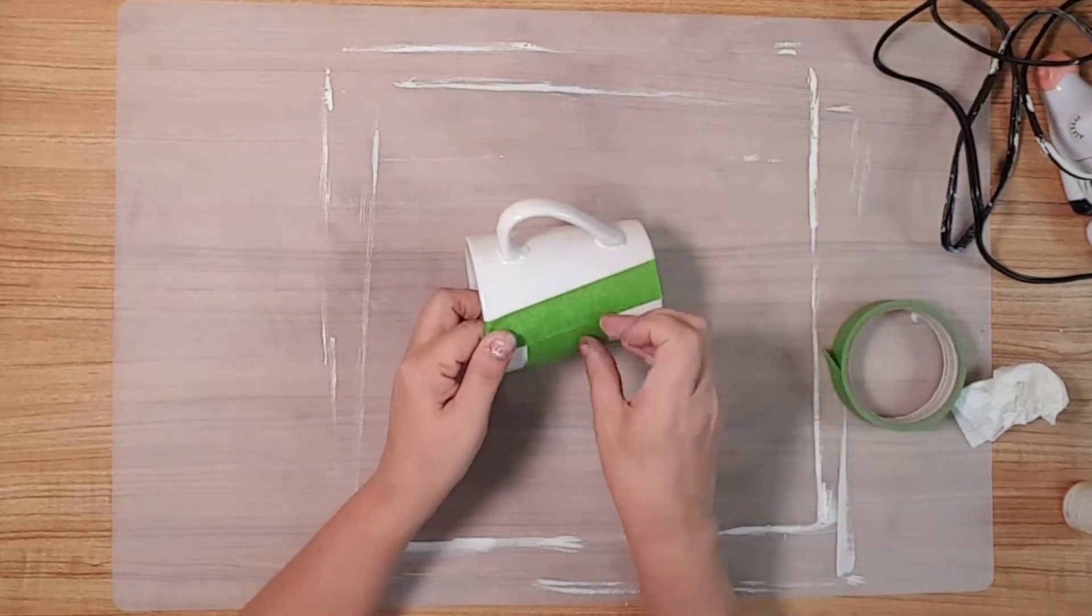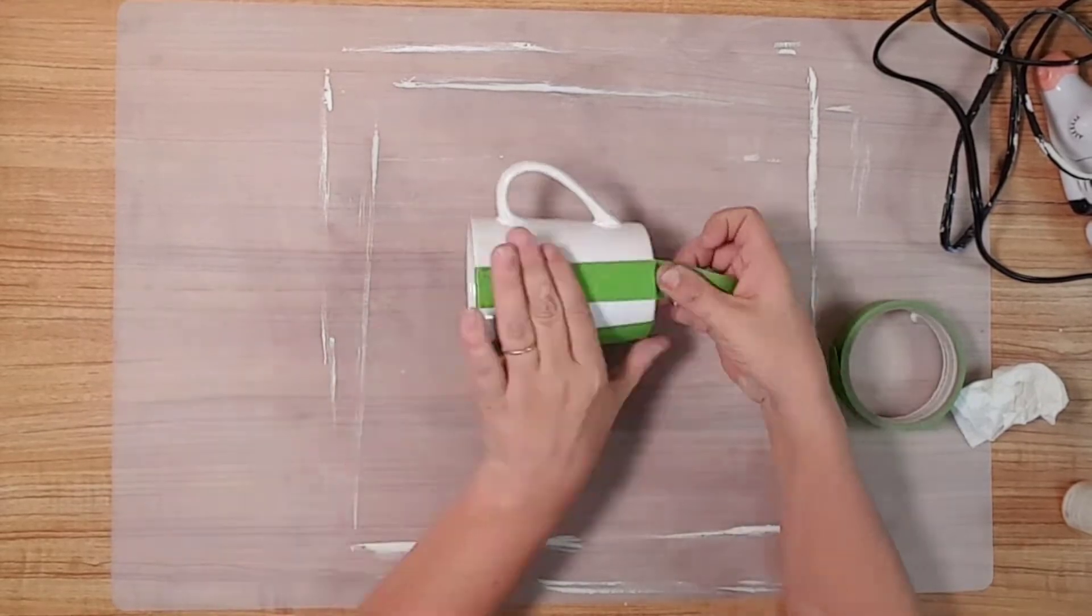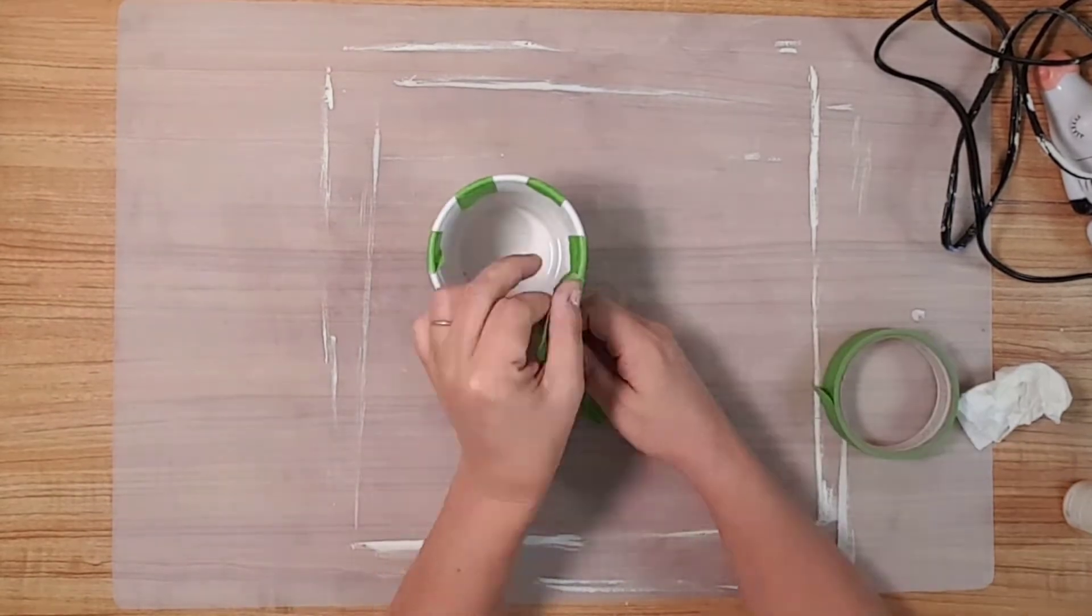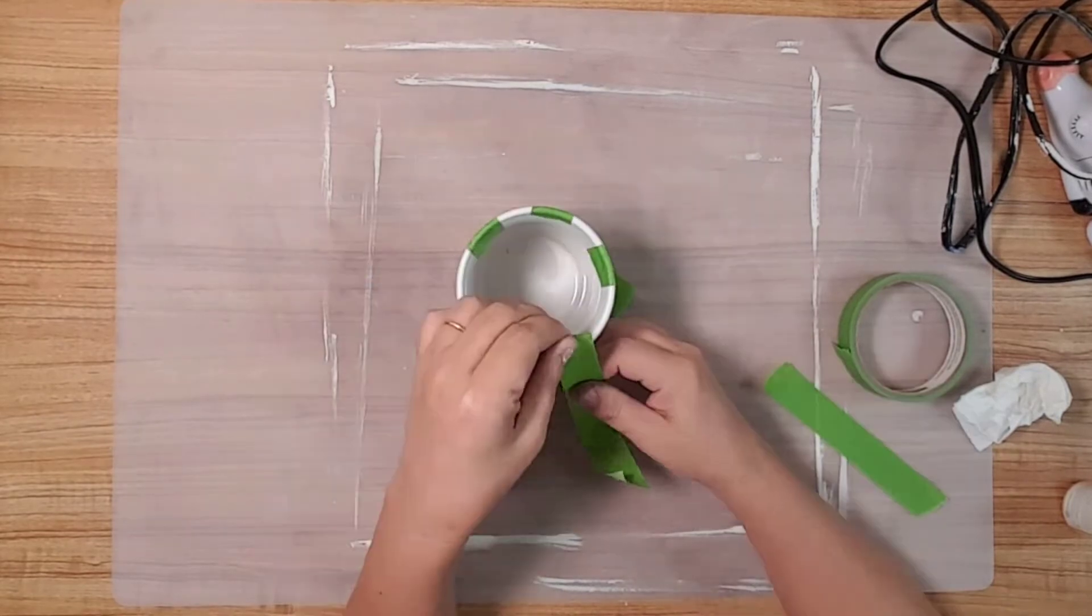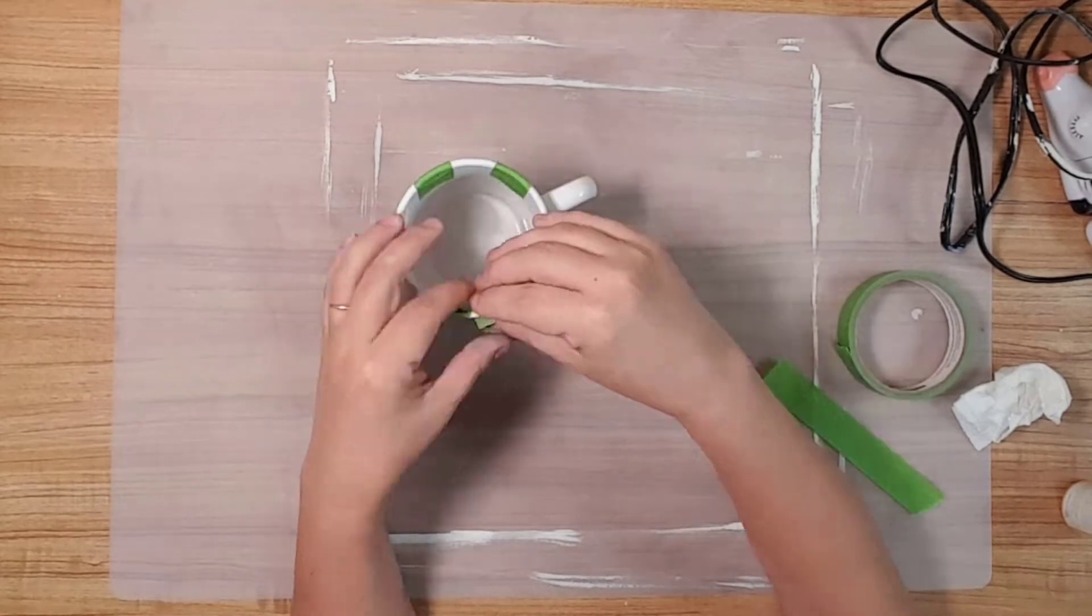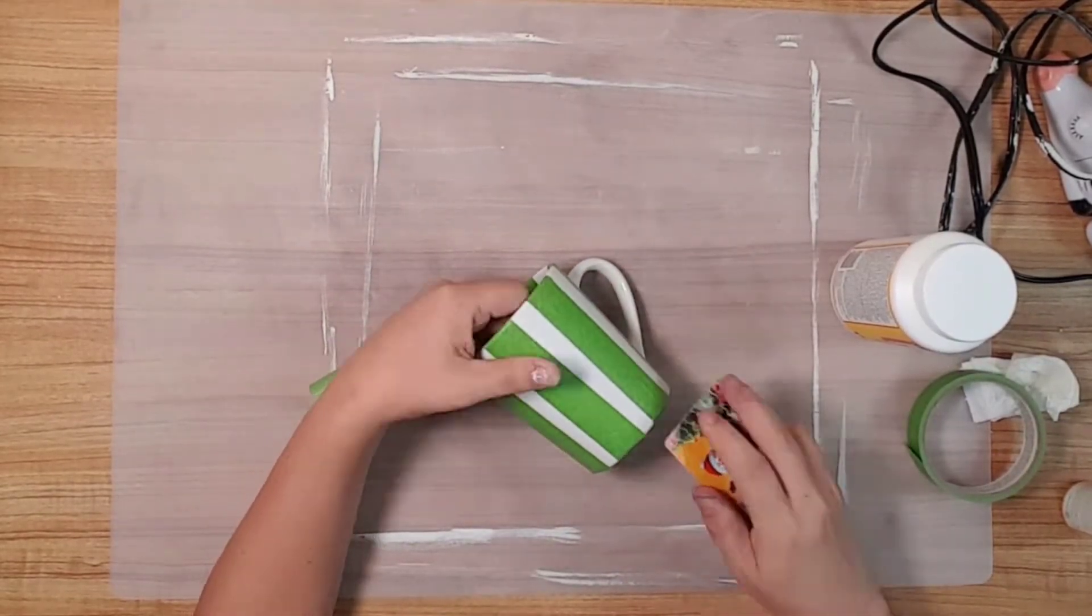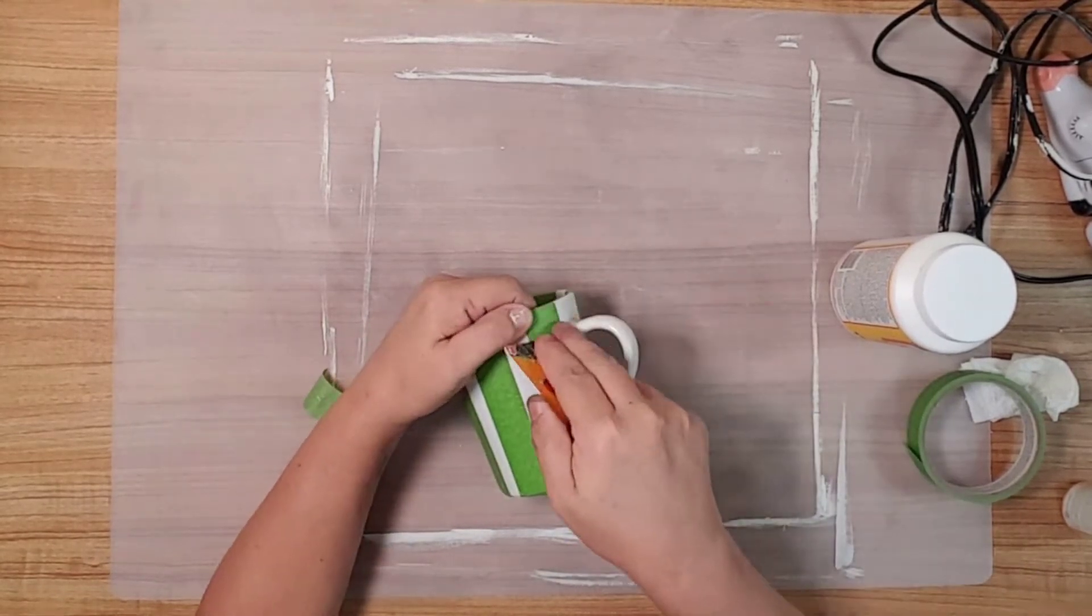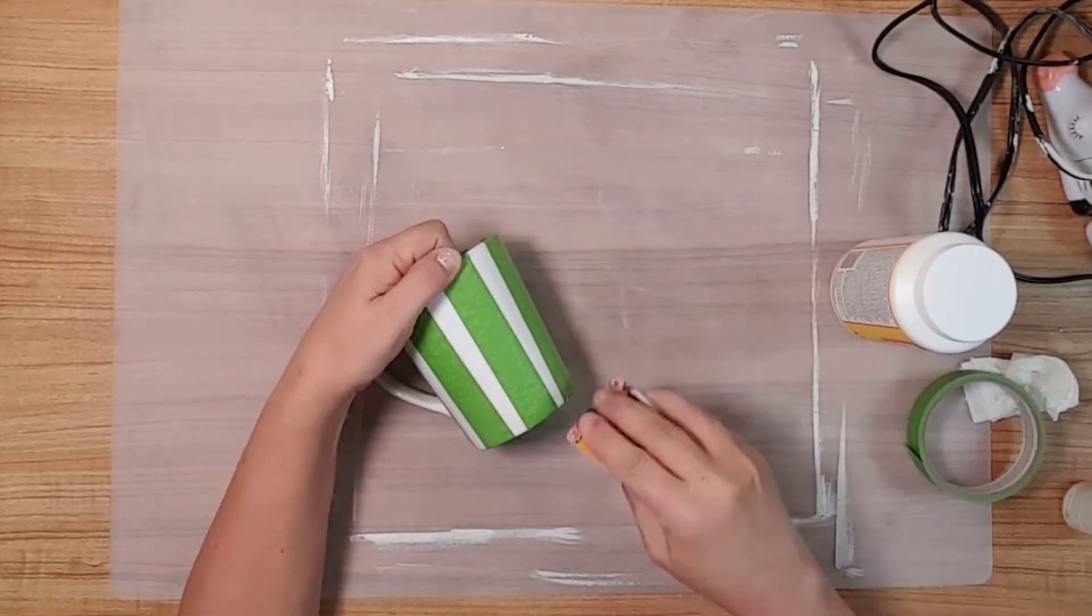So I removed the tape and just eyeballed the position, trying to get the lines as straight as possible. Once I finally got the pattern the way I wanted it, I used an old gift card to make sure the tape was pressed down well. I was trying to get as little bleed-through as possible on the mug.